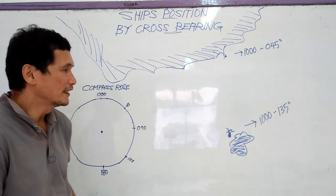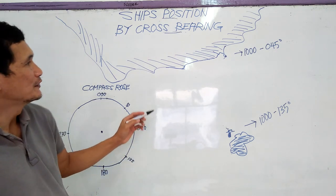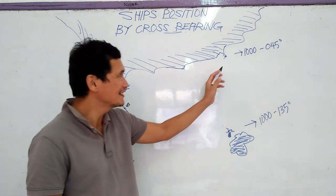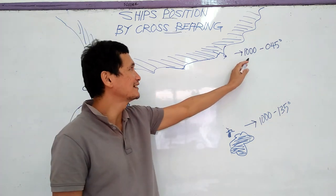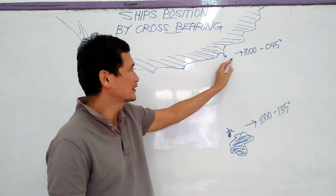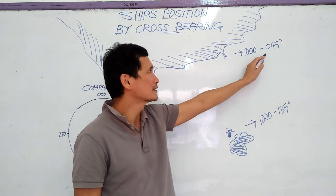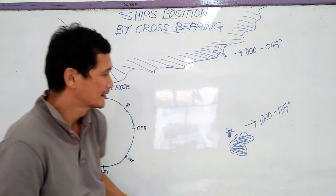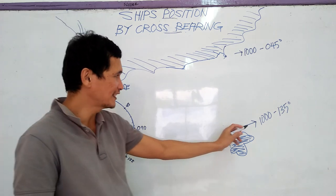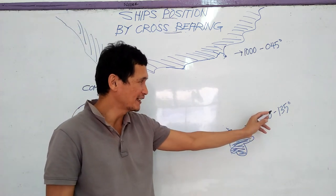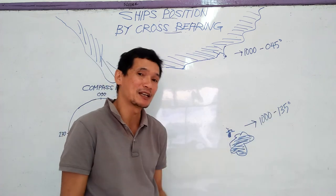in your reader, you notice that at 1000 hours, this point, the bearing is 045 degrees. And this point also at 0800 hours, the bearing is 135 degrees.